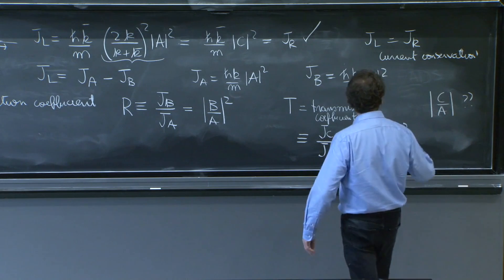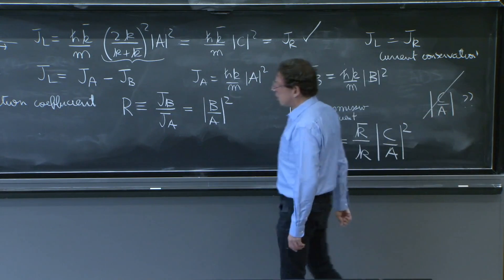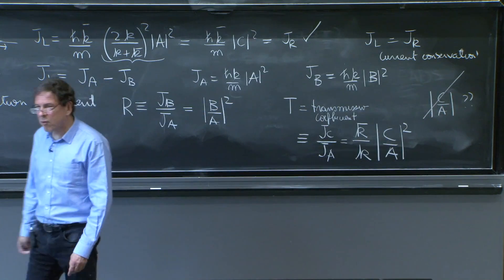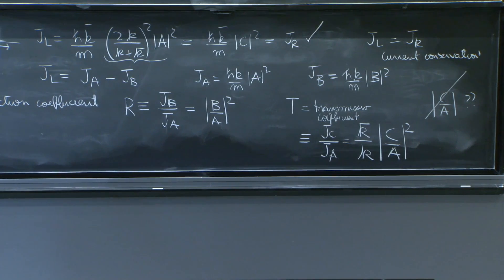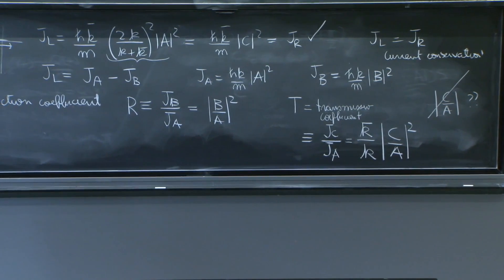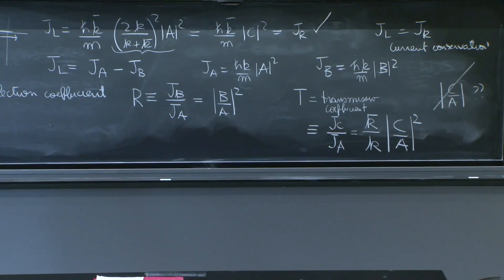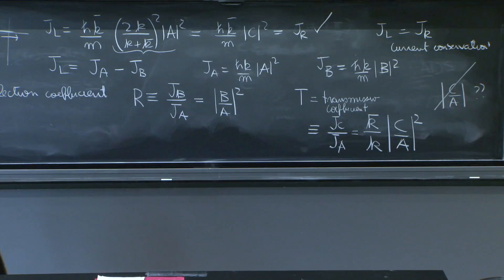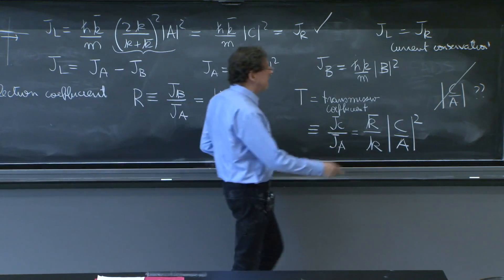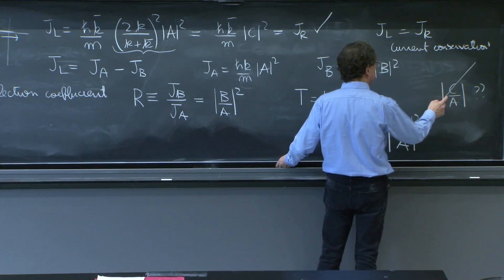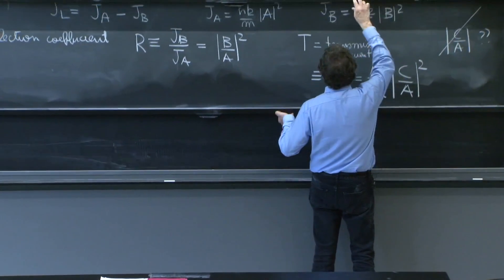So it's not just this number. The reflection and transmission coefficients really originate from probabilities, and the probabilities for this current. And therefore, it would have been very hand-wavy and actually wrong to think it's c over a.